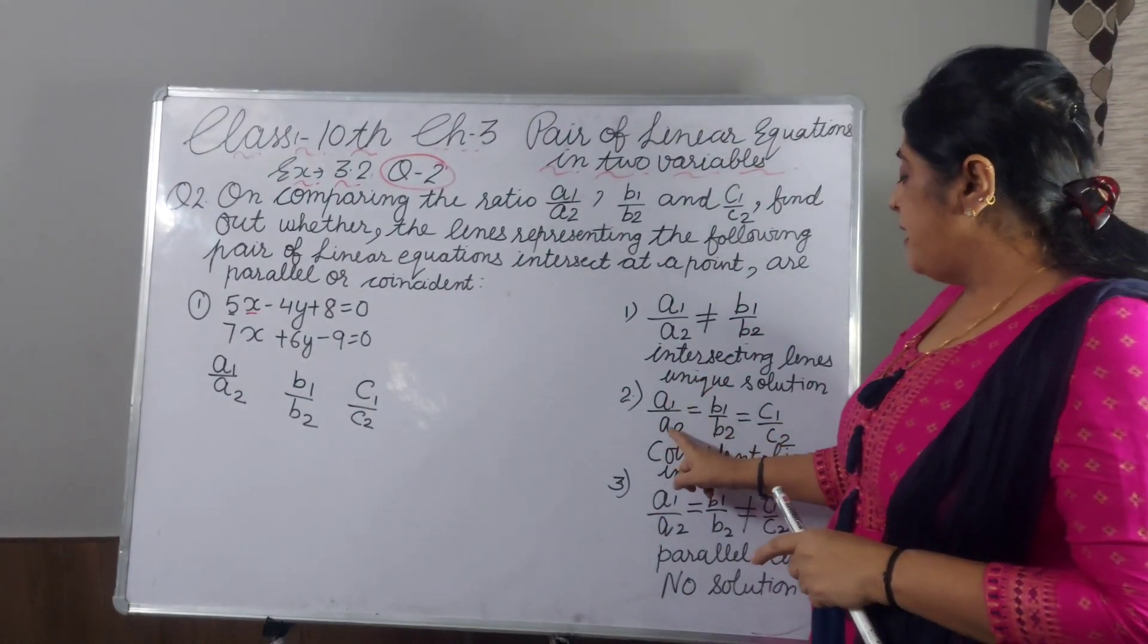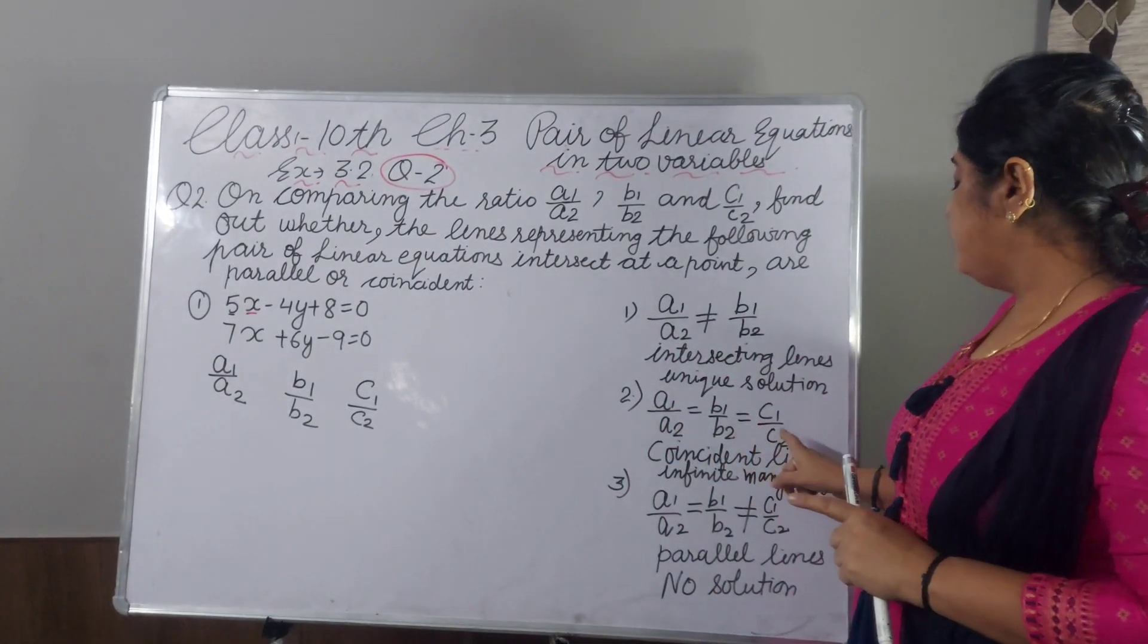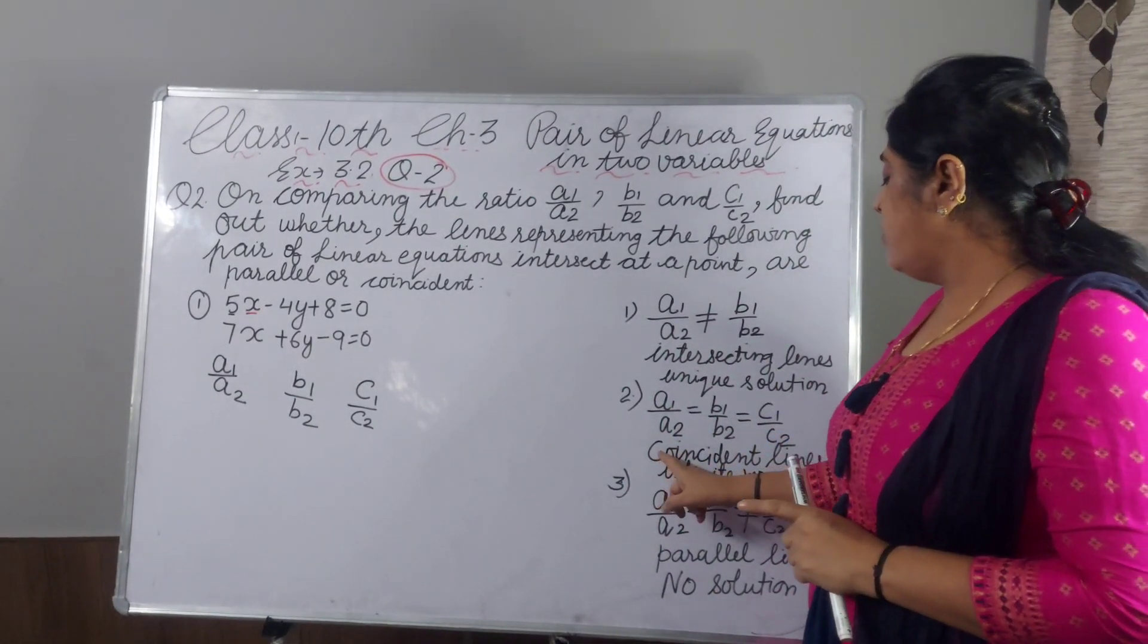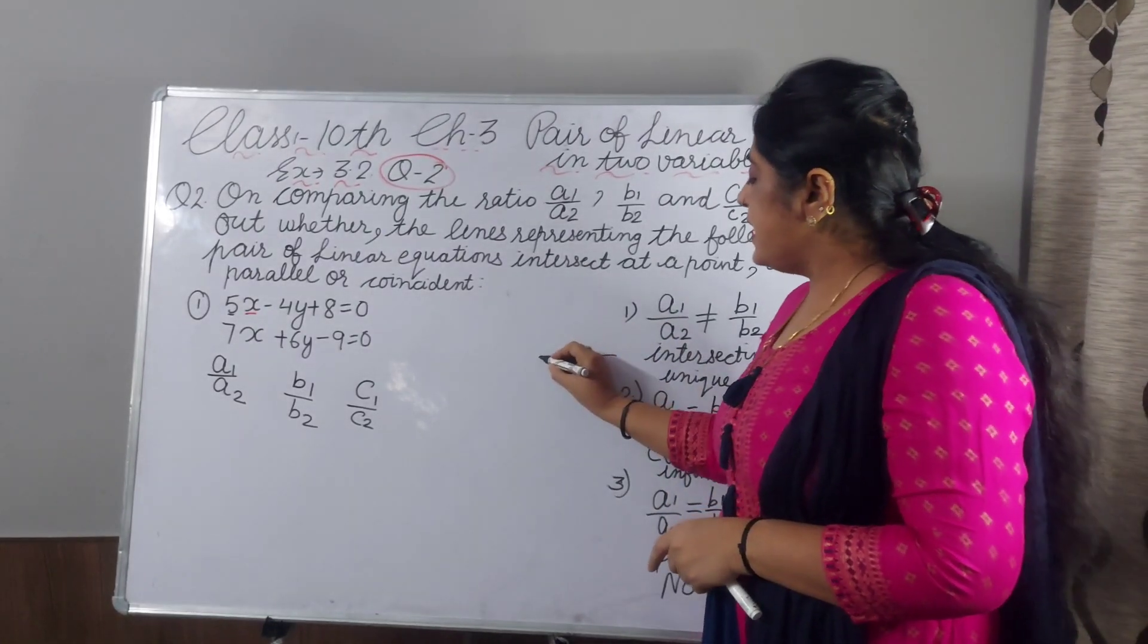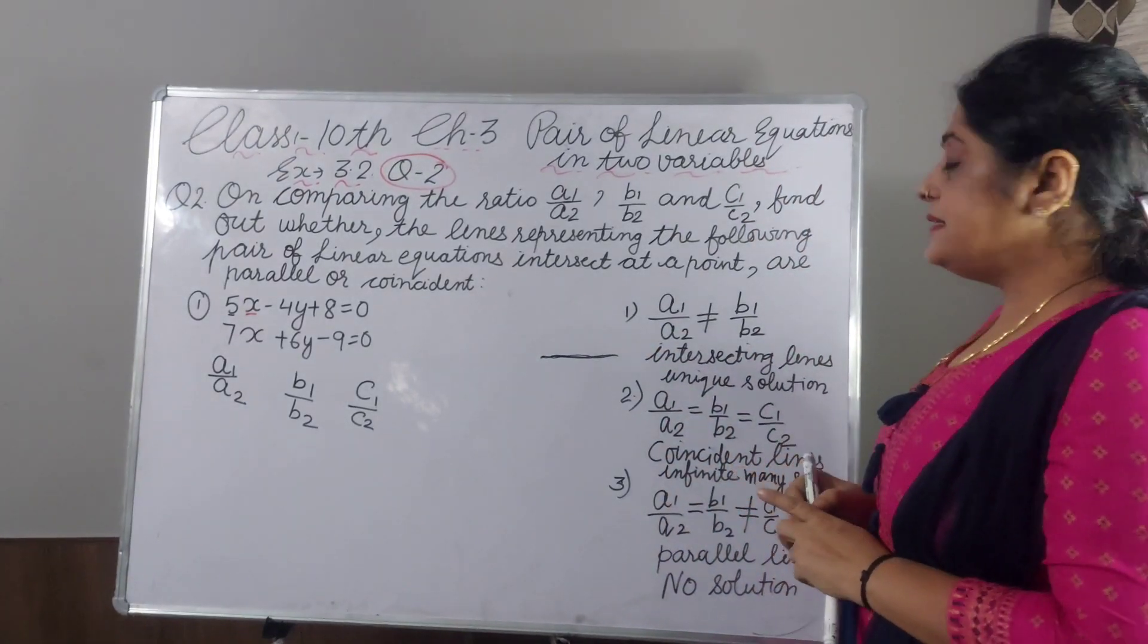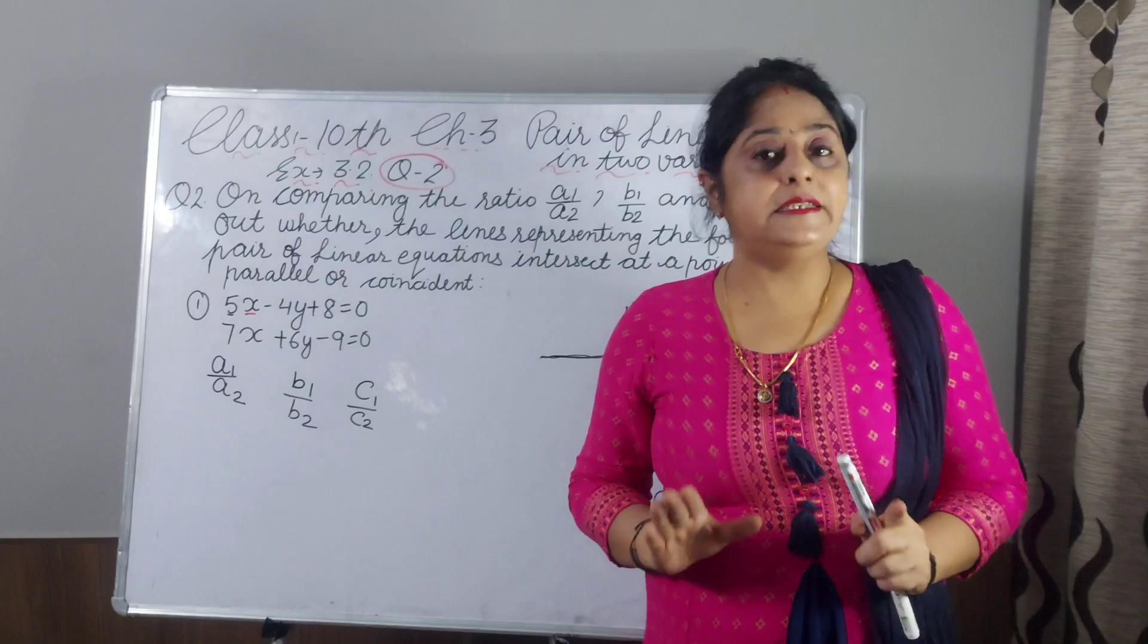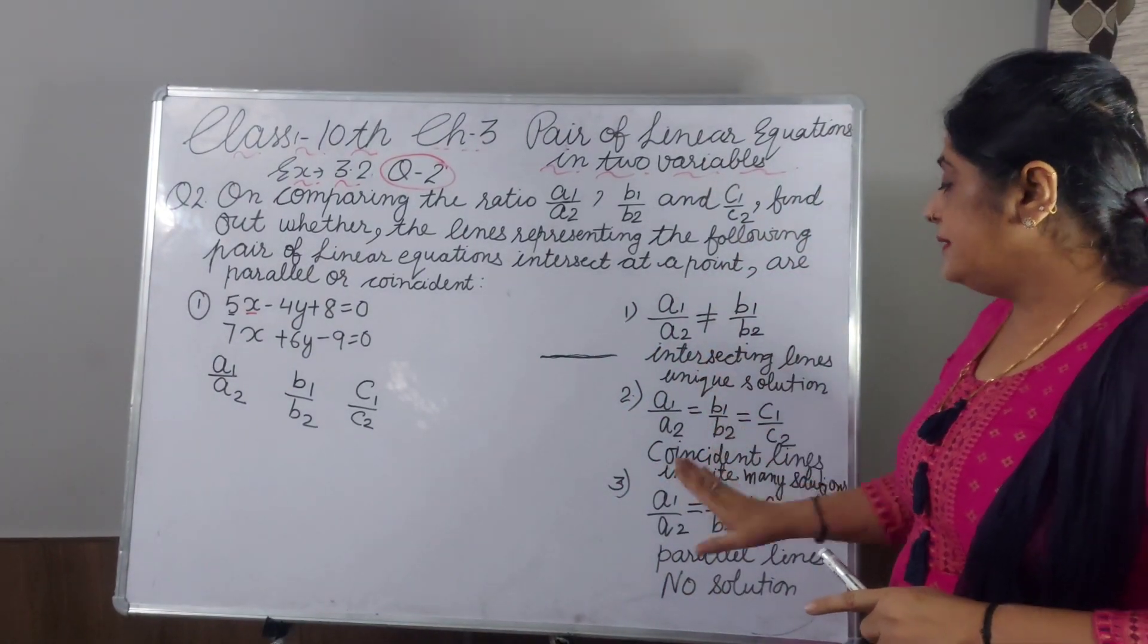If A1 by A2 equal to B1 by B2 and equal to C1 by C2, graphically they are coincident lines. Means, one line and second line cover this line. That is coincident lines. And algebraically, there are infinitely many solutions. And you have to remember all this and learn this.